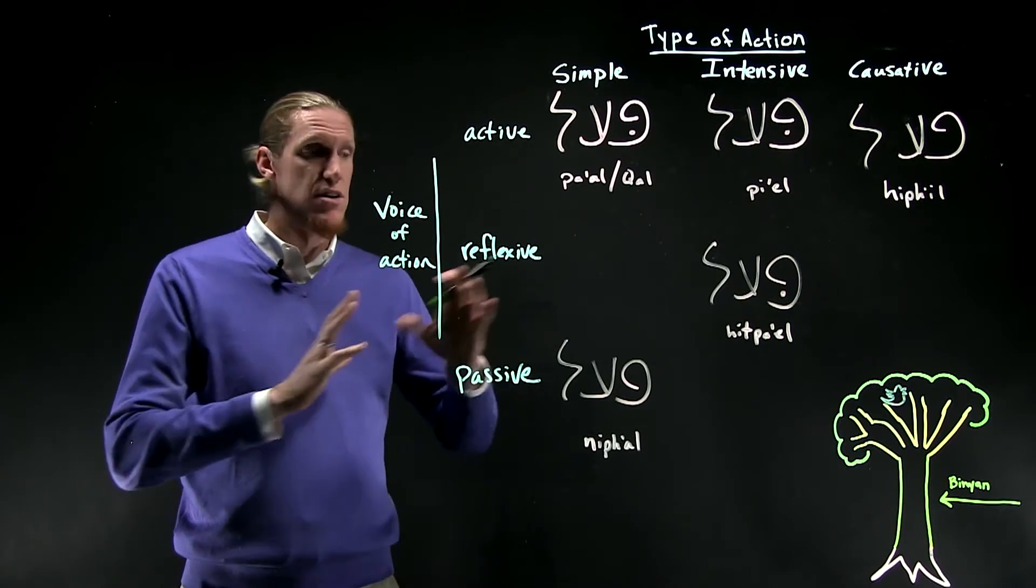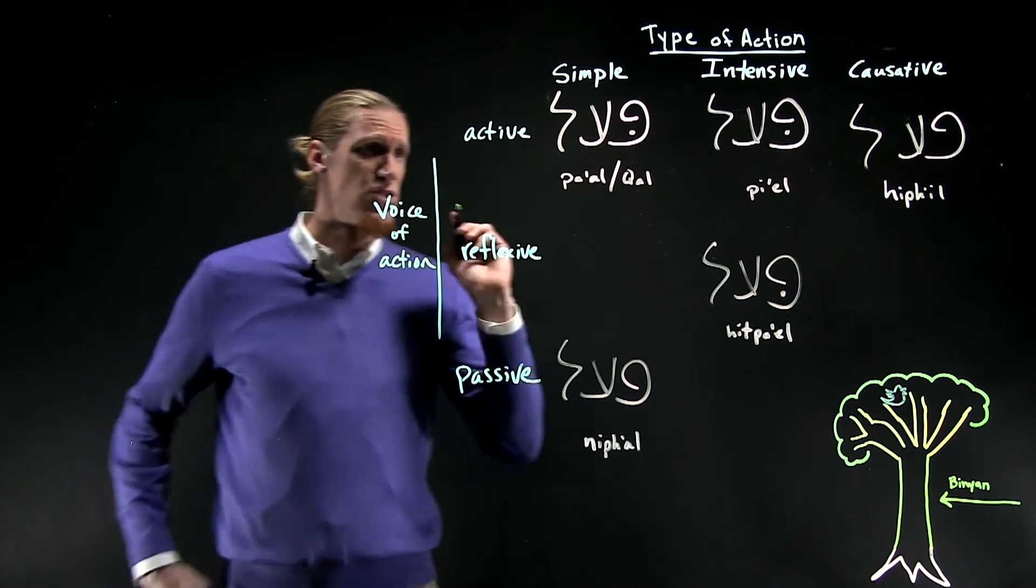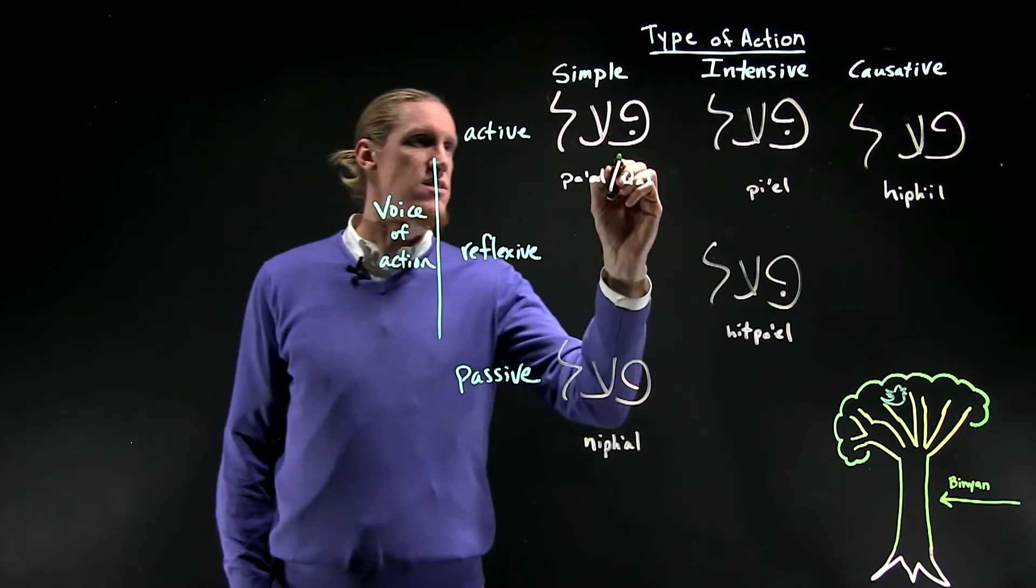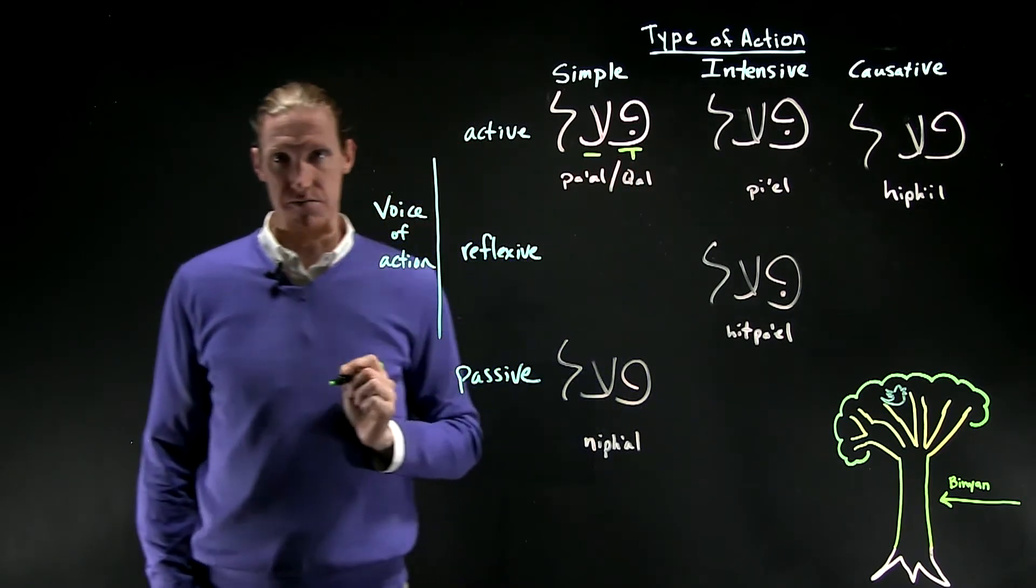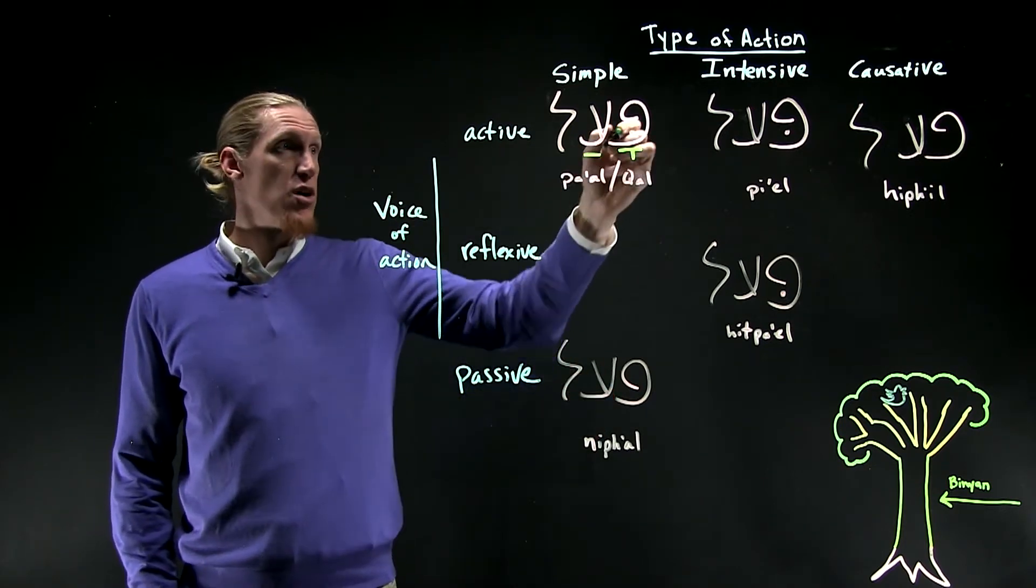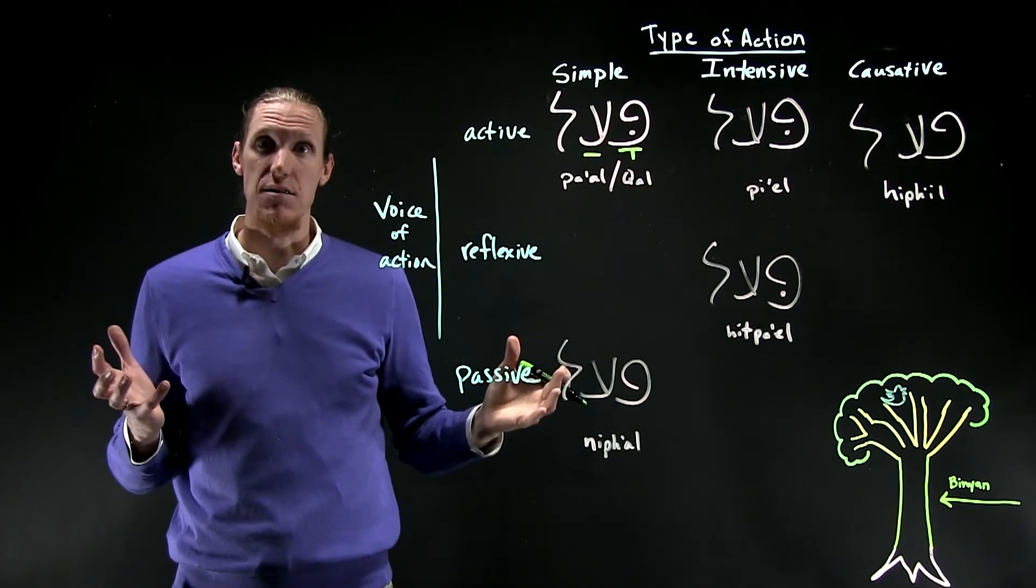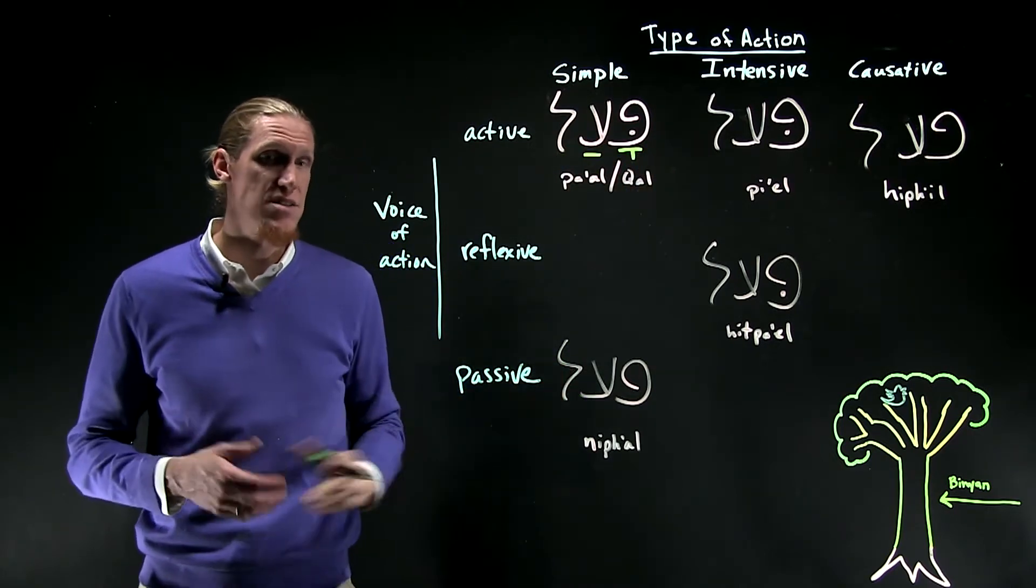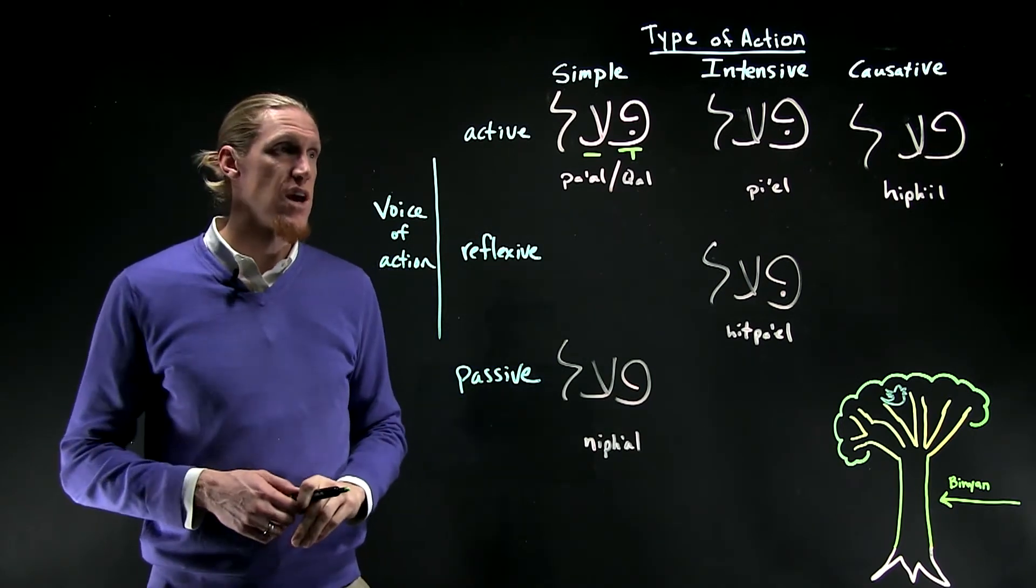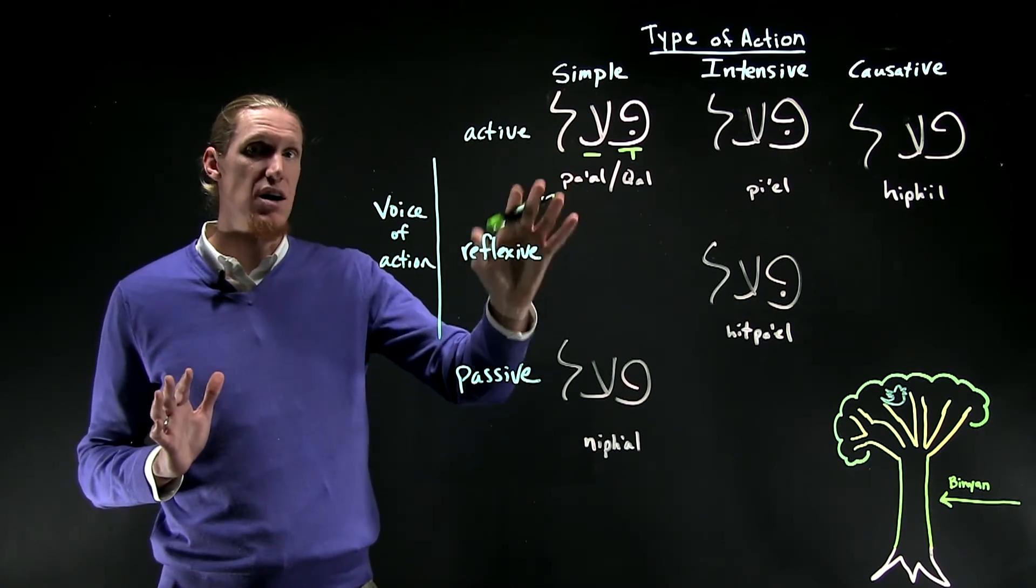There's a different pattern for the imperfect and the infinitive and so on and so forth. So the first one for the pa'al, simple active, remember, he washed, is simply a kamatz patach. This is the third masculine singular perfect form. So now you can see how pe-ayin-lamed with kamatz and patach becomes pa'al. That is the most common stem. Another name for it is qal. It's often referred to as qal. 70% of all Hebrew verbs appear in the pa'al or qal stem.